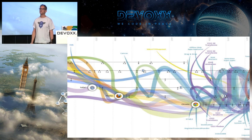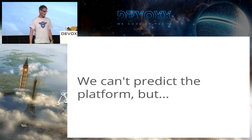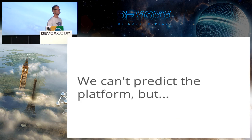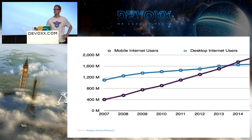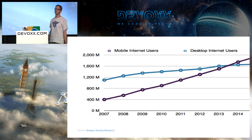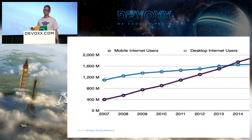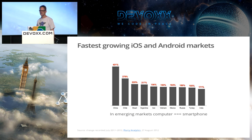Performance is becoming more and more important on mobile. Looking at all those different APIs, we obviously can't really predict what's going to happen. One thing we do know is that mobile web usage is overtaking desktop — it already has in many countries.